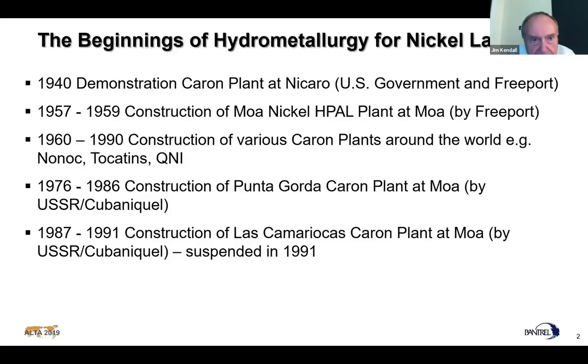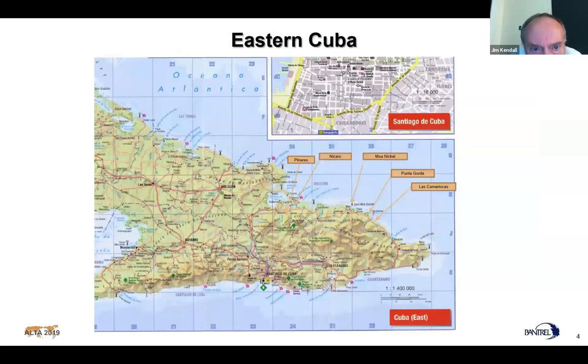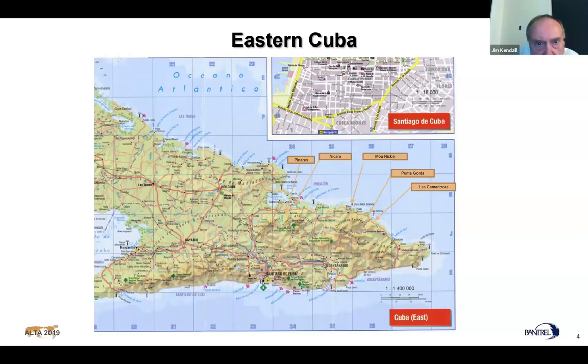Nickel was a war material. The Korean War pushed HPAL development at Moa by Freeport, although Sherritt was the technology provider. Various Karen plants were built in the 60s, 70s, 80s and 90s. In 1976-1986, the Russians built a copy of the Nicaro plant that the Americans had built. This is Eastern Cuba - the trade winds come from the northeast, which forms laterite deposits in the tropics. These are the five different mines that are operating now, have operated, or are planned.